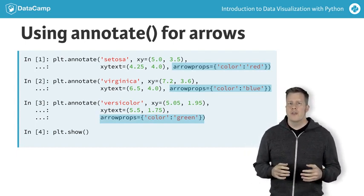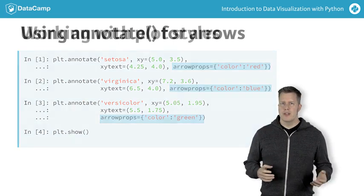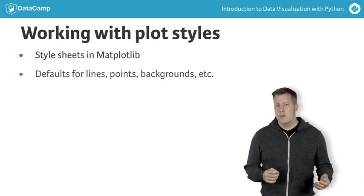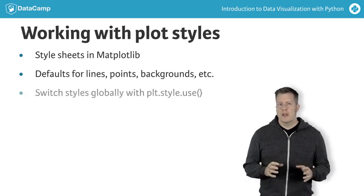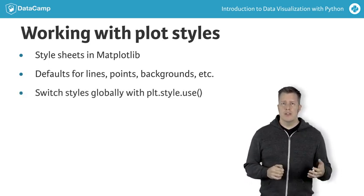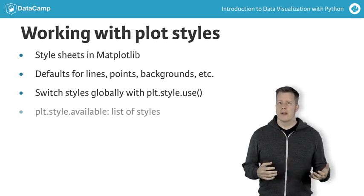Finally, we should know that the default plot styles are controlled by style sheets in Matplotlib. The stylesheets control default fonts, line widths, color palettes, backgrounds, and more. We can switch between global stylesheets using style.use, and we can find out what styles we can use with style.available.